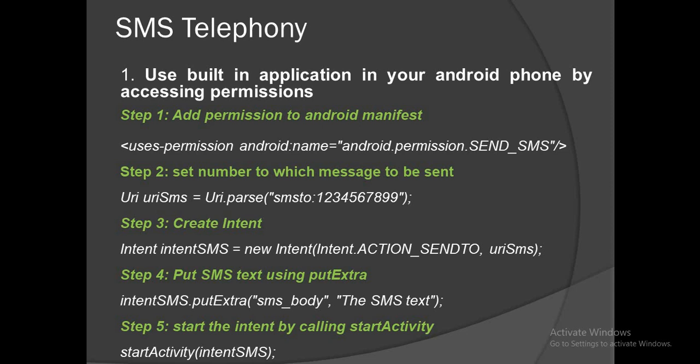For using the built-in application, follow these steps. Step one: add permission to the Android manifest. You need to add the line: uses-permission android:name="android.permission.SEND_SMS". This will give the permission to the app for sending the SMS.